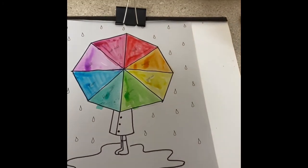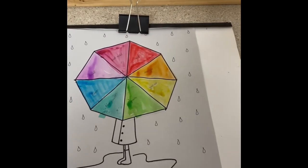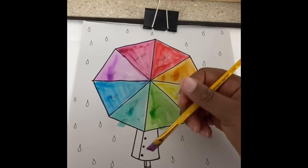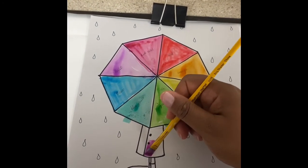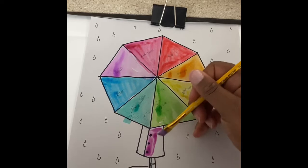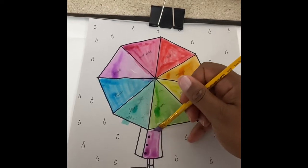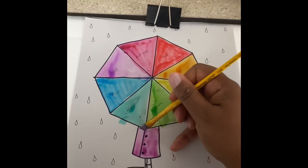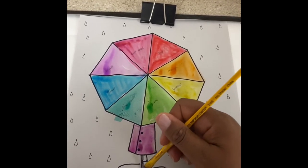And our umbrella color wheel is complete. So my favorite color is purple, so I'm going to paint my raincoat purple. I'm also going to paint my rain boots purple to match.